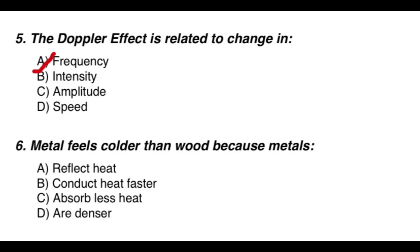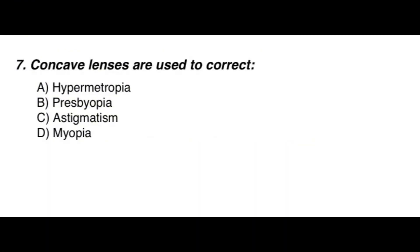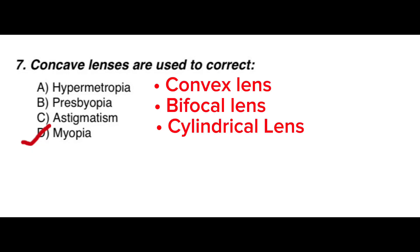Question 6: Metal feels colder than wood because metals — the correct option is P — conduct heat faster. Question 7: Concave lenses are used to correct — the correct option is D — myopia. Note: hypermetropia can be corrected by convex lens, biopia by bifocal lens, and astigmatism by cylindrical lens.